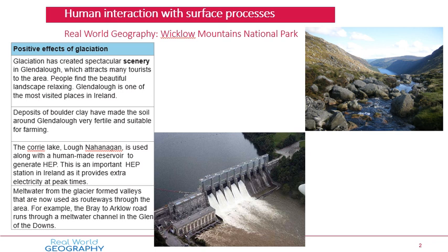Today we're going to focus on Glendalough National Park in County Wicklow, because the processes of glaciation have done a lot to shape the landscape there and create the mountains and valleys we see today. The last time there were glaciers in Ireland was during the last ice age, about 100 to 120,000 years ago. A glacier is a large thick sheet of ice - sometimes over one kilometre thick - and as glaciers slowly move across the surface they can shape and erode the landscape and create soil.